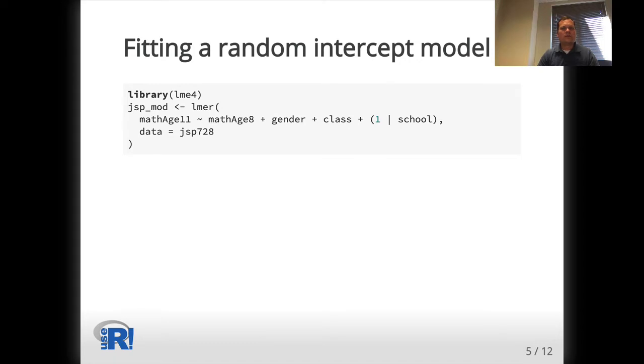We'll fit a random intercept model here, where we're considering the same model that Goldstein did, where math score at age 8, gender, and father's social class were used to describe the math scores of a child at age 11. Here, we fit this model using LMER and store the results in the JSP_mod object.